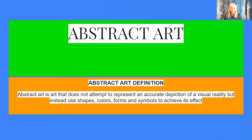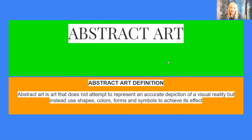So what is abstract art? Here is a definition. It is art that does not attempt to represent an accurate depiction of a visual reality or something or someone, but instead uses shapes, colors, forms, and symbols to achieve the effect. As we look at some of the artists and art, you'll see that the focus is really and truly on the shapes and forms and colors.